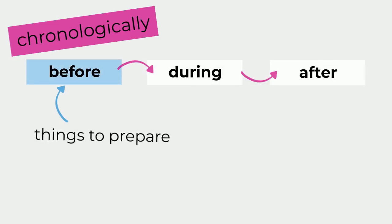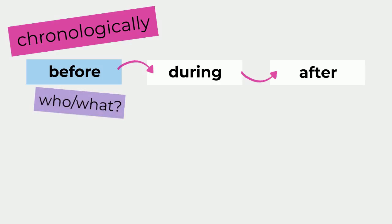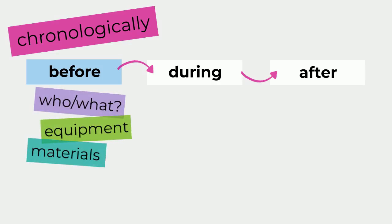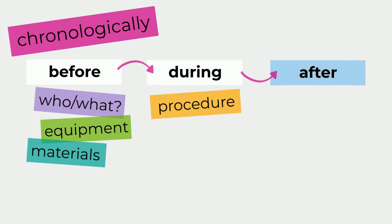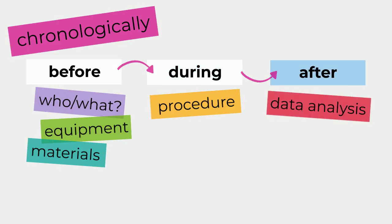Before sections cover things you needed to prepare in order to carry out the research. It's common to start with who or what you investigated, then include equipment, materials, or anything else relevant. During covers the data collection procedure and any other sections about what you did. Finally, after covers data analysis or other activities that took place after data collection.